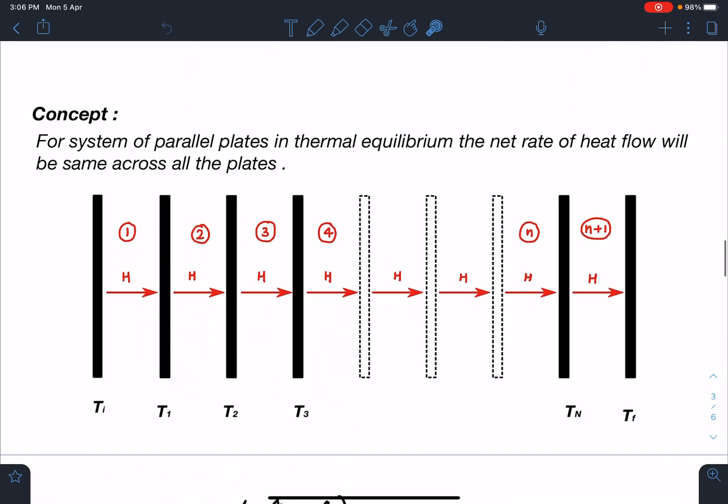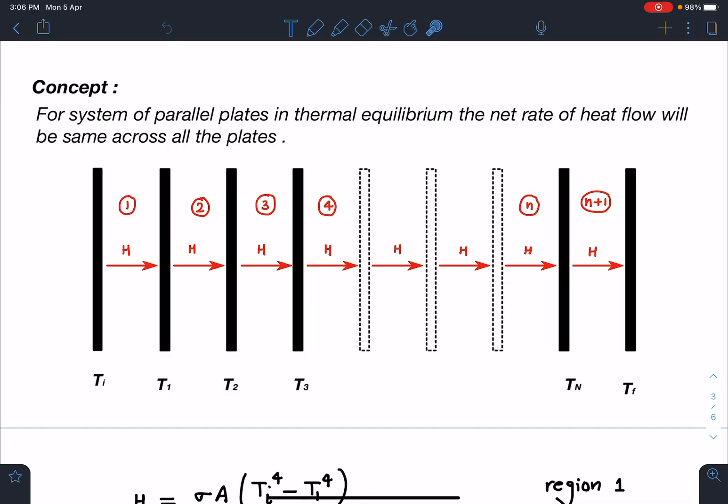Concept wise we can see for a system of parallel plates in thermal equilibrium or in steady state, the net rate of heat flow will be same across all the plates. This is a very nice equation and very quick answers it can give to us in such cases. In steady state, overall net heat transfer H is going to be same everywhere. I am dividing these plates into different regions: region 1, 2, 3, 4 and like this there are going to be N plus 1 regions.